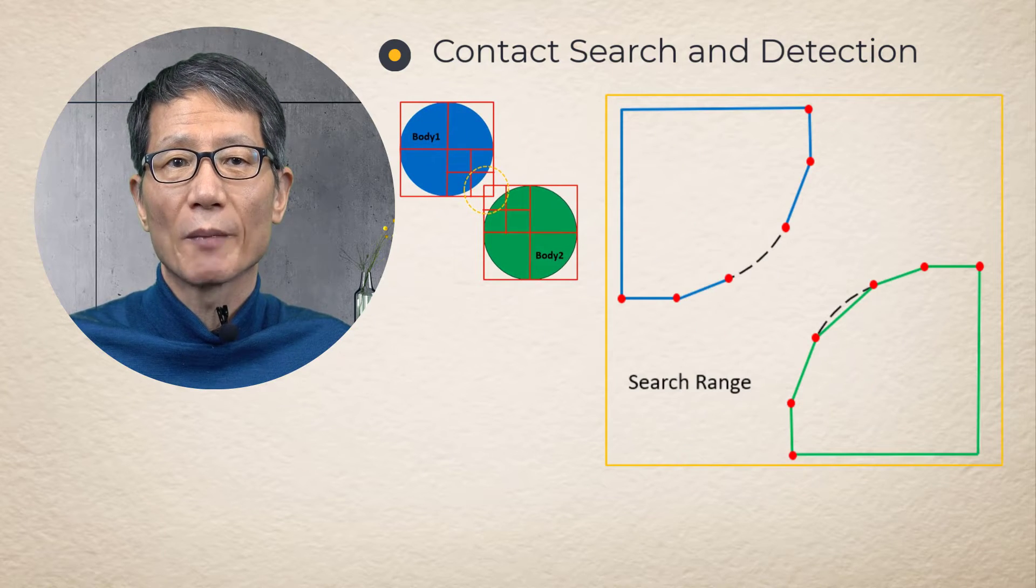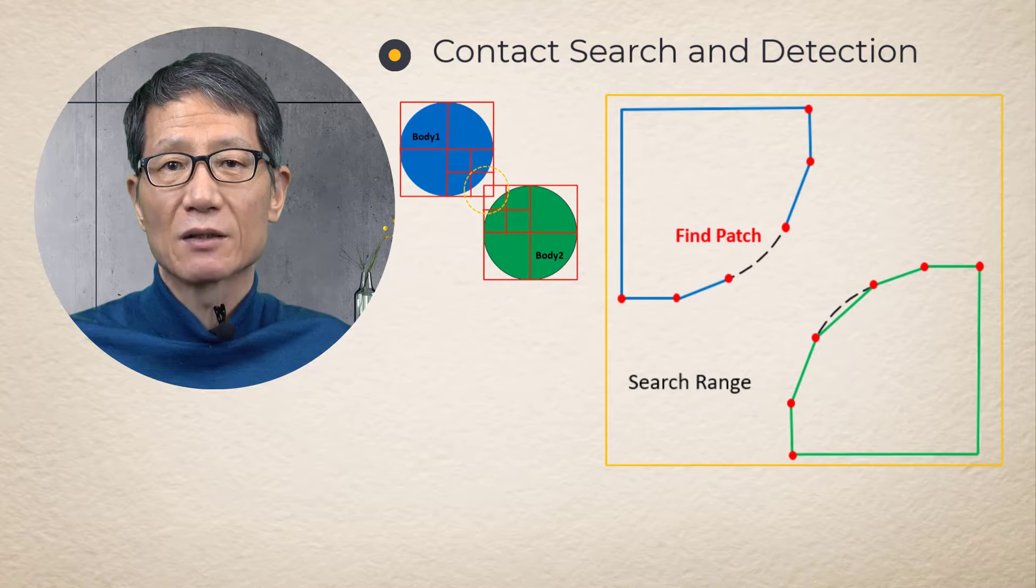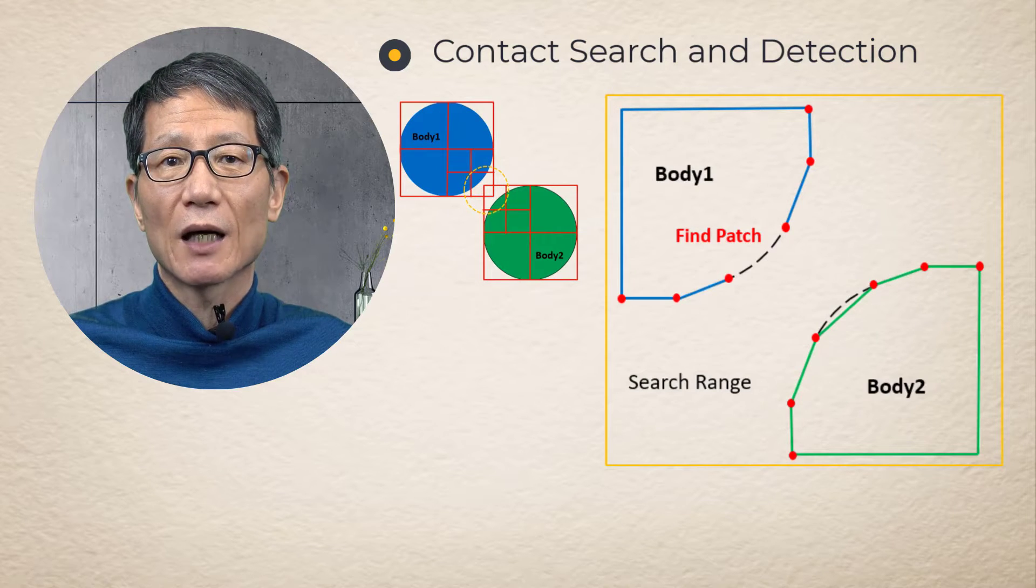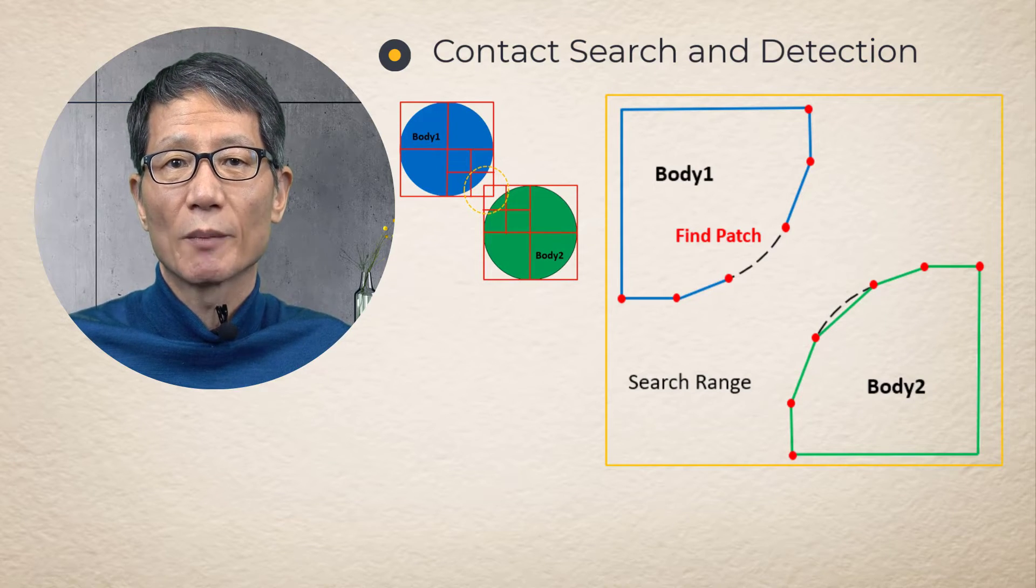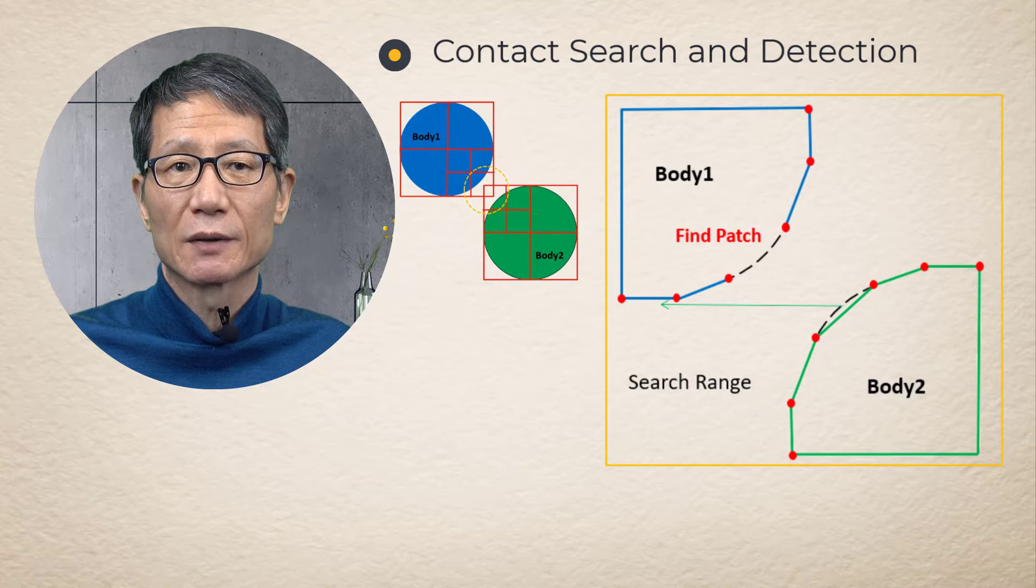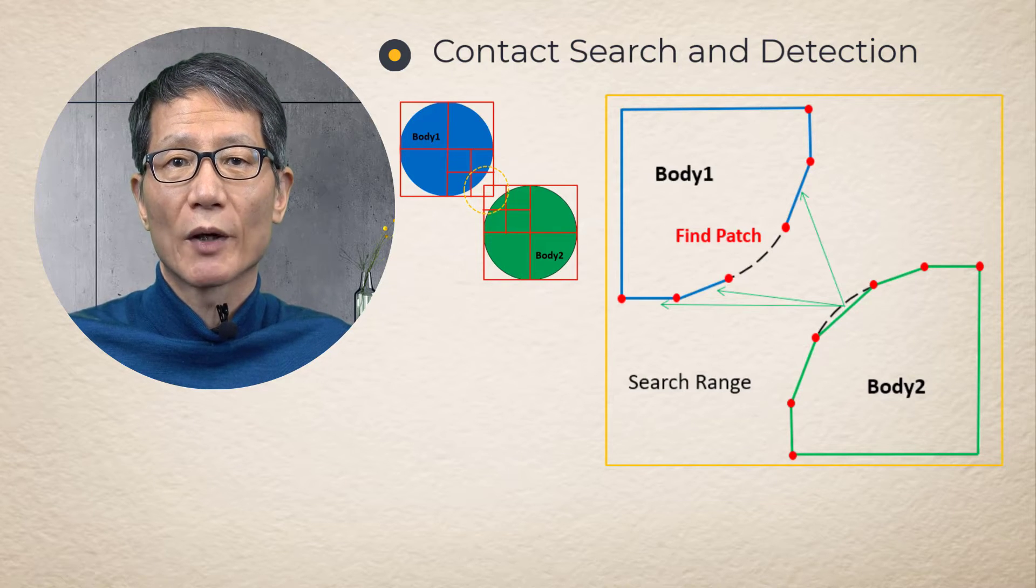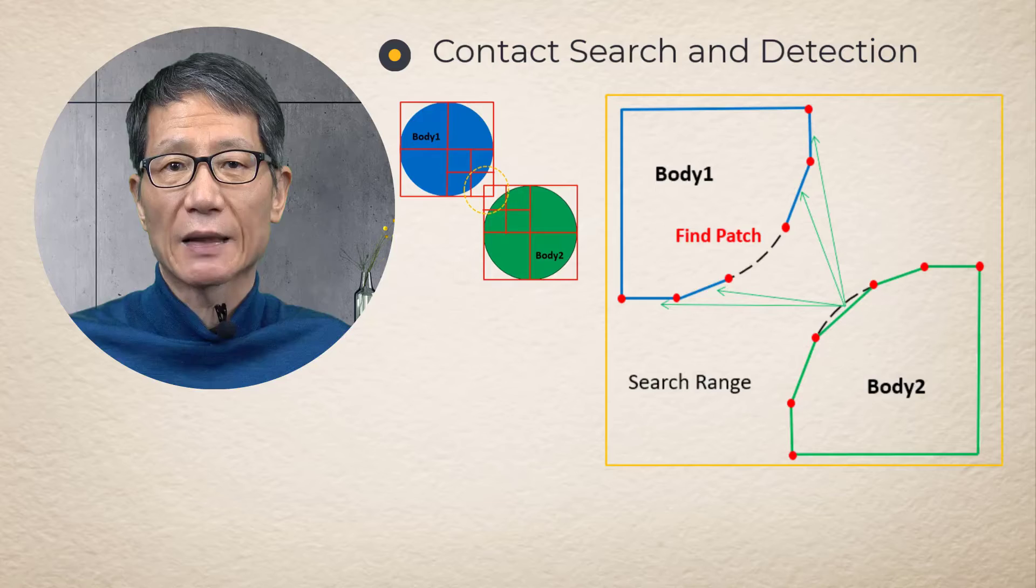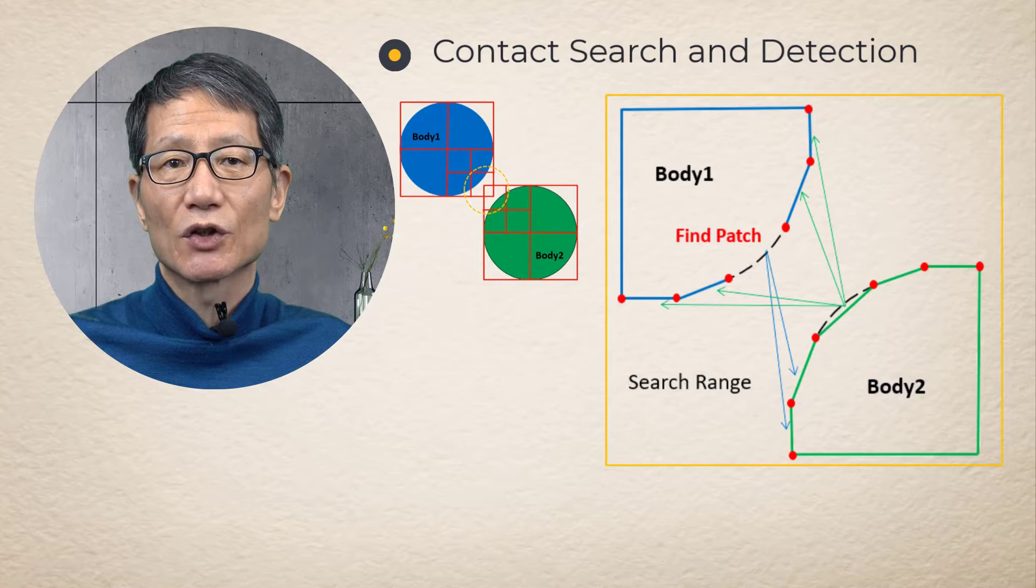When two bodies are approached into a contact threshold distance, a binary search of subdomain boundary boxes is triggered to find out which subdomain boxes are overlapped. Once overlapping subdomain boxes are detected, a local search begins.